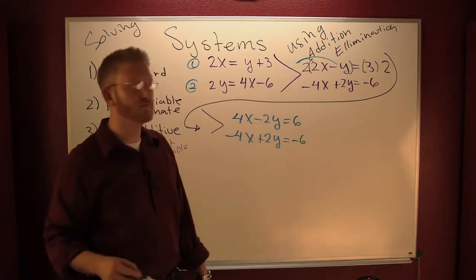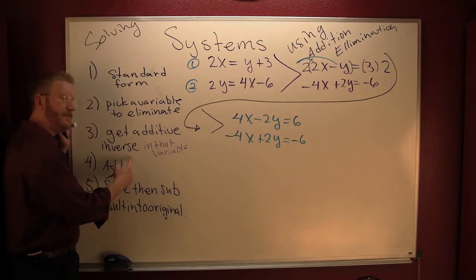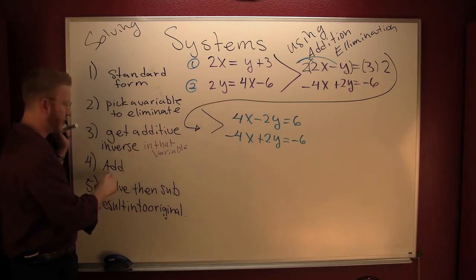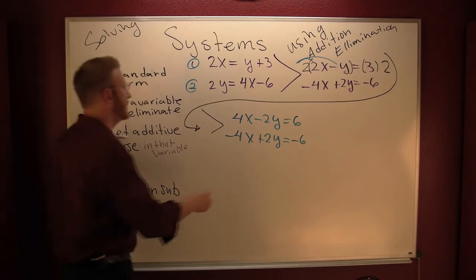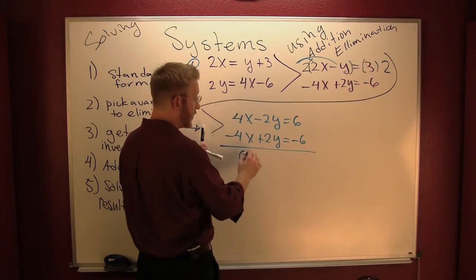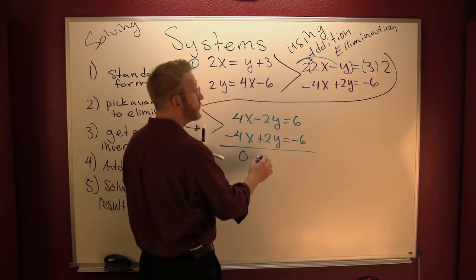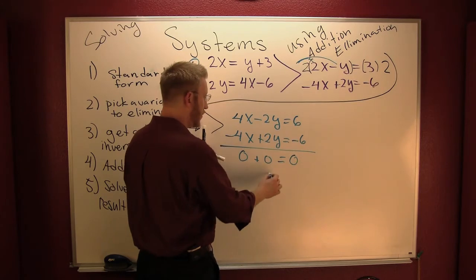So in following my game plan, have I got additive inverses? Yes, 4 and opposite -4. So now what do I do? I'm gonna add them. Add them straight on down. This is 0 + 0 = 0.